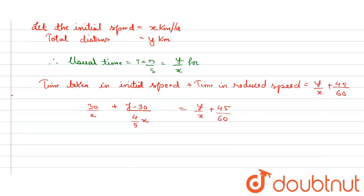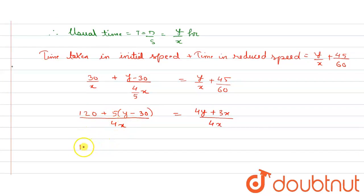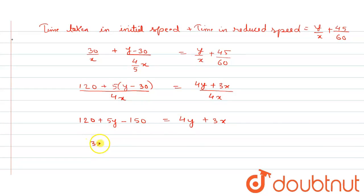Solving this equation, we get 120 plus 5(y − 30) upon 4x equals y/x plus 45/60. On further simplification, we get 120 + 5y − 150 = 4y + 3x, which gives us 3x − y = −30. Let this be equation one.